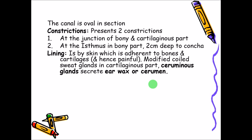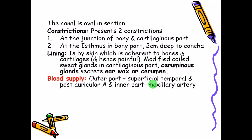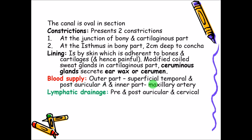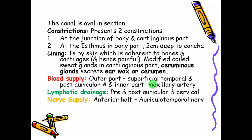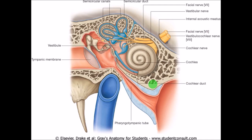There are glands secreting earwax. The blood supply to the outer part is by the superficial temporal artery and posterior auricular artery, and to the inner part by the maxillary artery. Lymphatic drainage is into the pre-auricular, post-auricular, and cervical groups of lymph nodes. Nerve supply: the anterior half by the auriculotemporal nerve and the posterior half by the auricular branch of the vagus nerve.